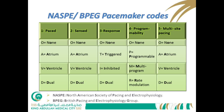For the first letter — chamber paced — it may be Atrium, Ventricle, or Dual: A, V, or D. The second letter — chamber sensed — is also A, V, or D. The third letter — response — may be Triggered or Inhibited. Inhibited means that if the pacemaker senses the myocardium's own electricity, it will be inhibited and not deliver a stimulus. Triggered means it will deliver a stimulus.